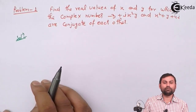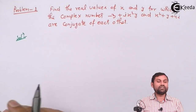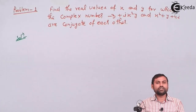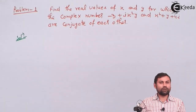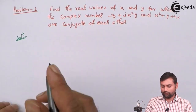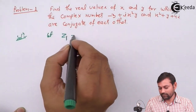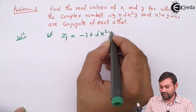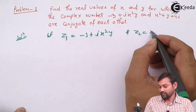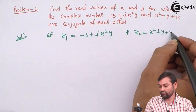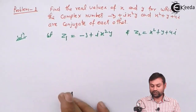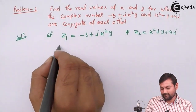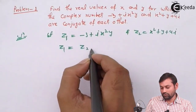Question में दिया है कि ये दोनों complex numbers एक दूसरे के conjugate हैं, तो हम क्या करेंगे — दोनों को एक पे conjugate लगाके equal कर लेंगे और solve करेंगे। So suppose z1 है minus 3 plus ix²y, और z2 है x² plus y plus 4i। Question दिया है कि they are conjugate of each other, so z1 equals to z2 bar।